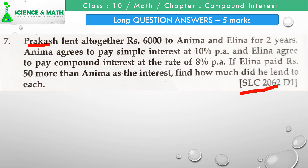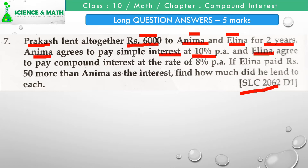In this question, there is a person Prakash who lent some money — total 6000 — to Anima and Elena. The time is two years for both Anima and Elena. For Anima the rate is 10% per annum. At the end of two years, Elena paid rupees 50 more, meaning compound interest paid by Elena is rupees 50 more than simple interest paid by Anima. We need to find how much money was given to Anima and Elena each.